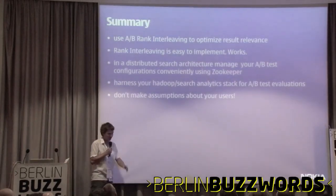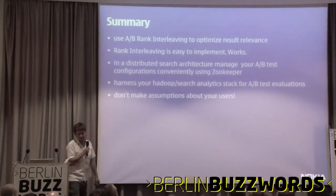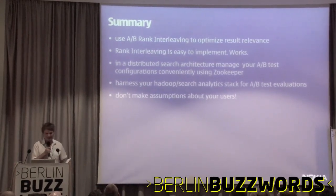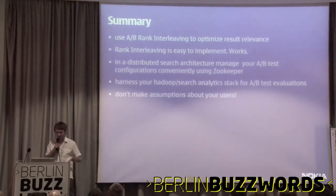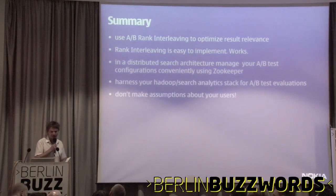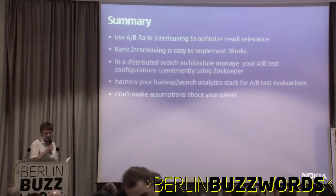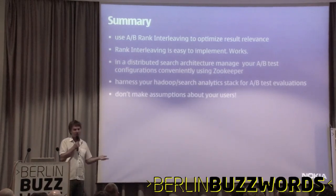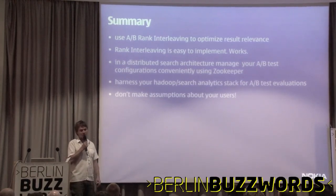Here's a summary: use A-B rank interleaving to optimize result relevance — rank interleaving is easy to implement and works, and it's well established; Yahoo is using it for search optimization. In a distributed search architecture, manage your A-B test configurations conveniently using ZooKeeper. Harness your Hadoop search analytics stack for A-B test evaluations. And be ready for surprises — don't make assumptions about your users beforehand. Rather, put it to the test, measure, and find out what works best.